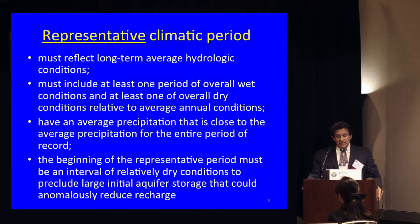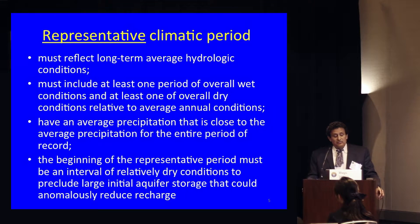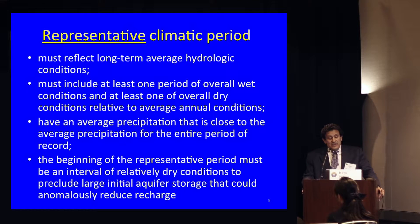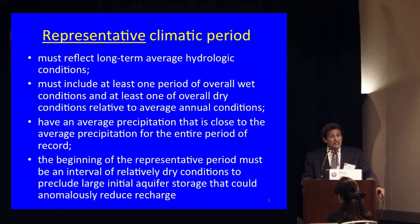What is a representative climatic period? It is one that reflects long-term average hydrologic conditions. It must include at least one period of overall wet conditions and at least one of overall dry conditions relative to the average annual conditions. It must have an average precipitation close to the long-term average, and very importantly, the beginning of the representative period must be an interval of relatively dry conditions — for reasons I will explain shortly.